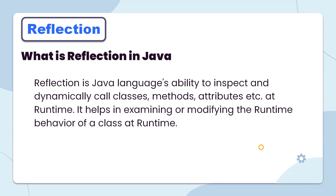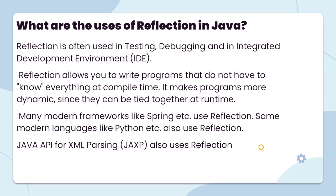Reflection in Java is the language's ability to inspect and dynamically call classes at runtime. It helps in examining or modifying the runtime behavior of a class. Reflection is used in testing, debugging, and integrating development for metadata. Reflection allows writing programs that do not have everything determined at compile time, making programs more dynamic since they can be tied together at runtime.